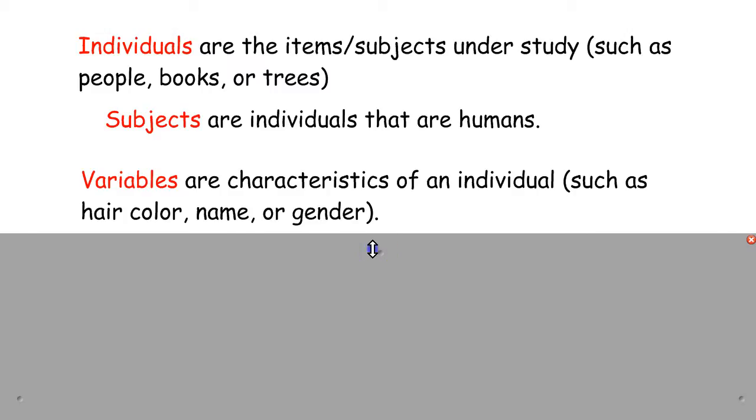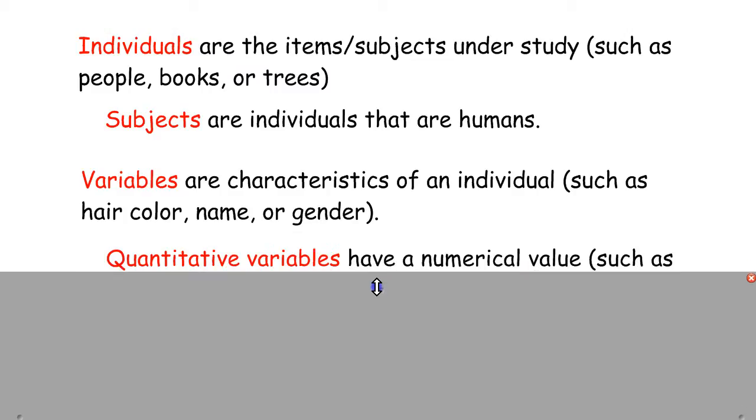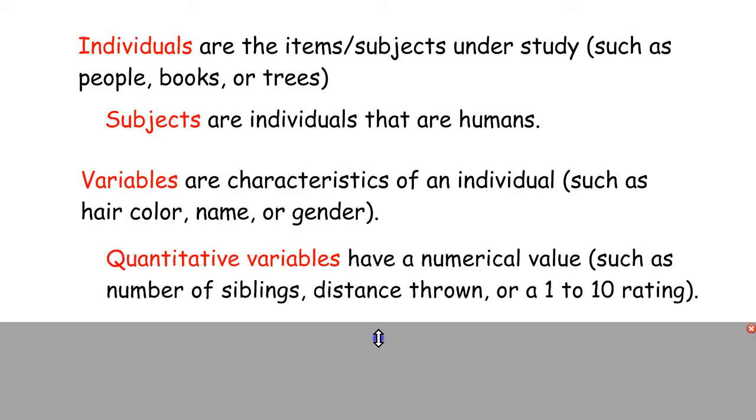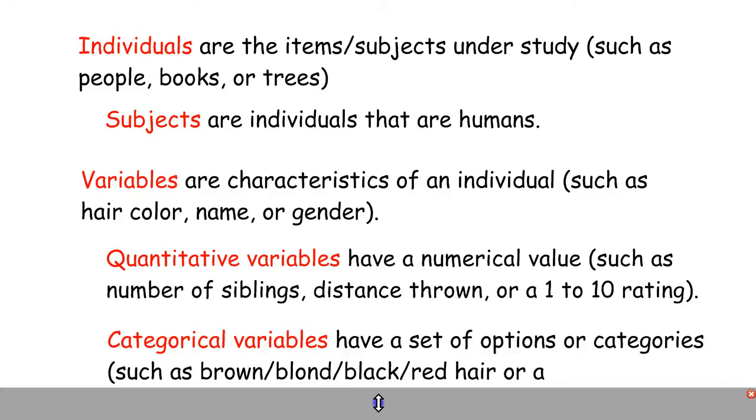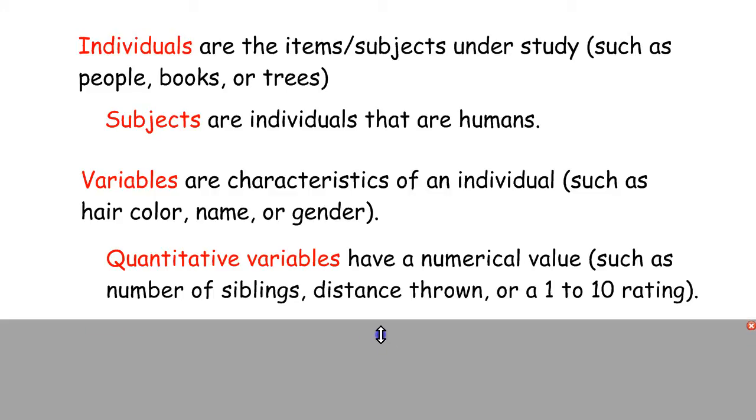And there's a couple different types of variables. The easiest way to break it down is by quantitative and categorical. So start with quantitative. It's whenever you have a numerical value. So if I asked you how many siblings you have, how far you threw the football, rate something from 1 to 10. That's going to be a quantitative variable because you get a quantity or a number back as your response.